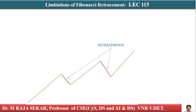In an uptrend, the price is going up, then pullback, moving again, pullback again — these movements are known as retracements.